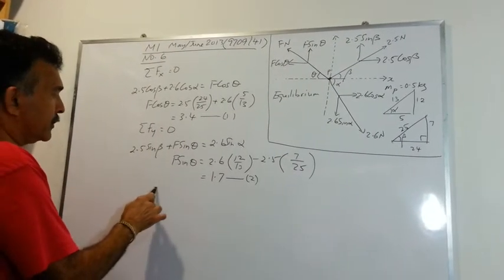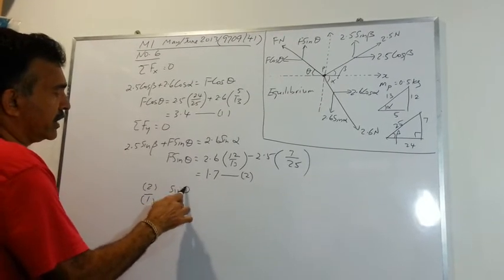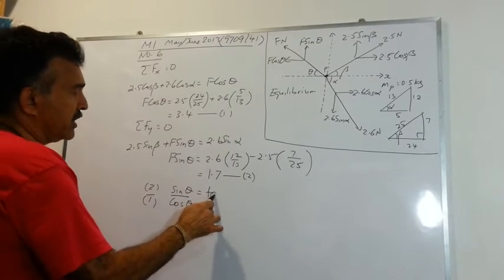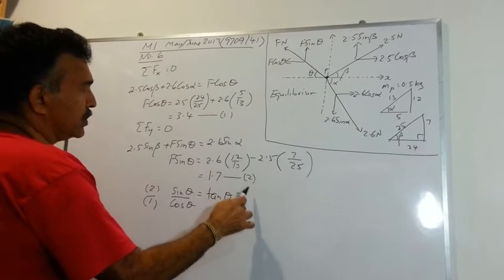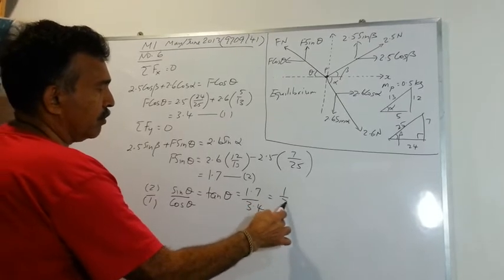So if you take 2 divided by 1, you will get sin theta over cos theta will be equals to tangent theta. And that will be equals to 1.7 over 3.4 will be equals to 1 over 2.